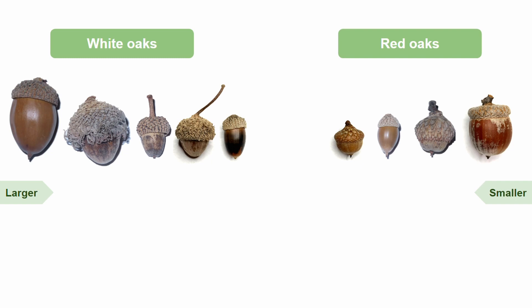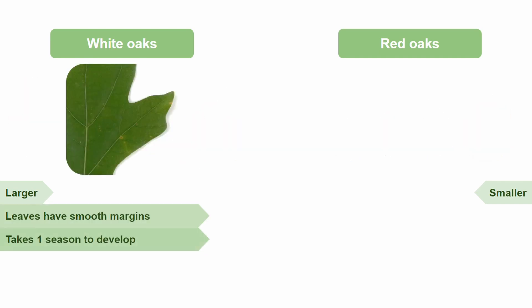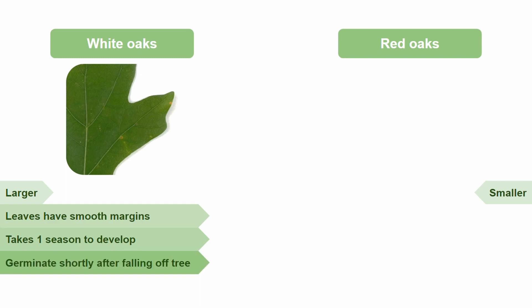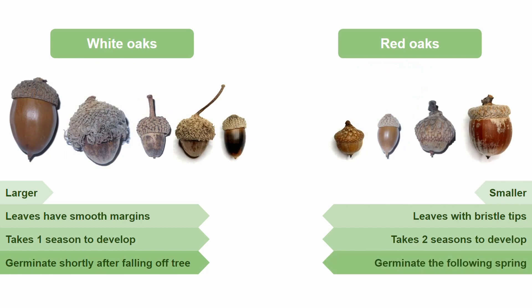White oaks produce leaves that have a smooth margin and they generally have acorns that only take one season to develop. Those acorns typically germinate shortly after falling off the tree. Red oaks produce leaves that have bristle tips, as well as acorns that take two seasons to grow instead of just one. Their acorns typically germinate the following spring after falling from the tree.